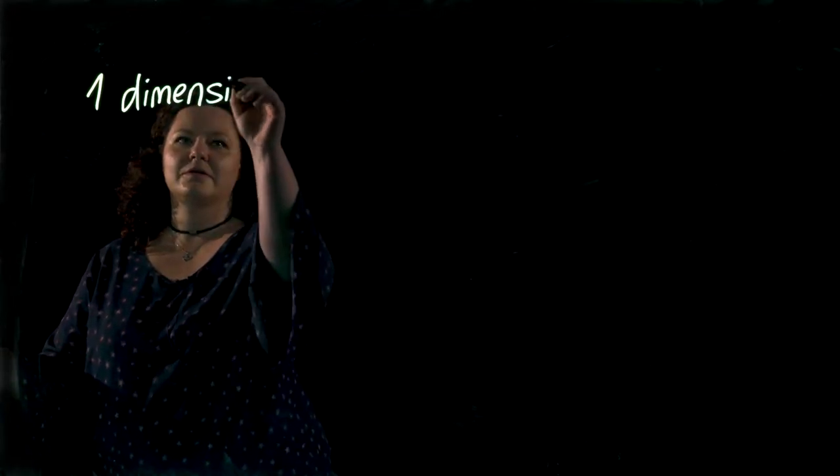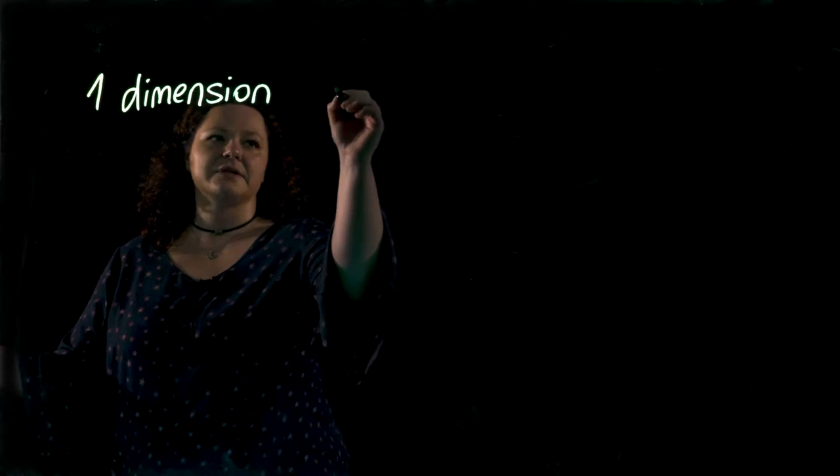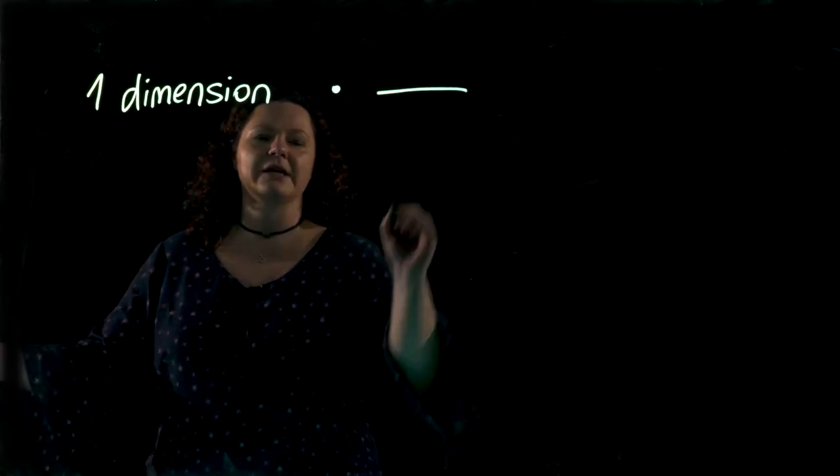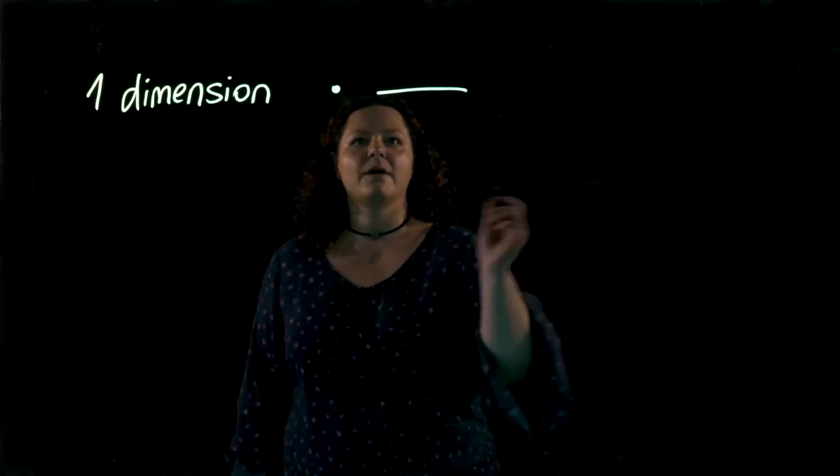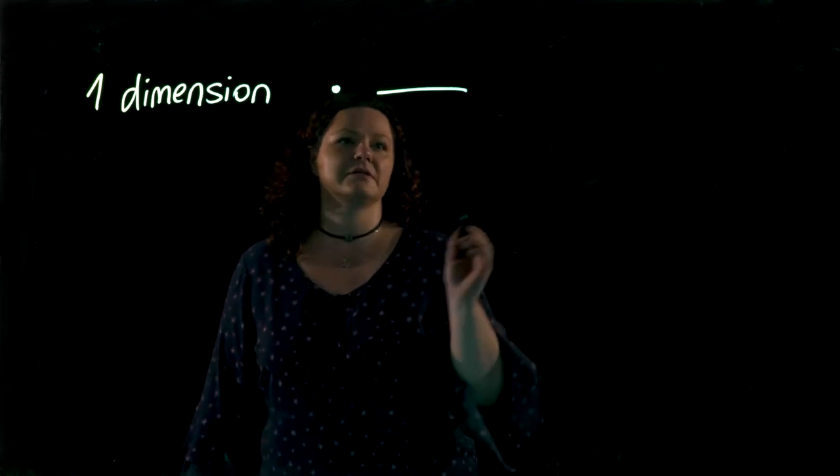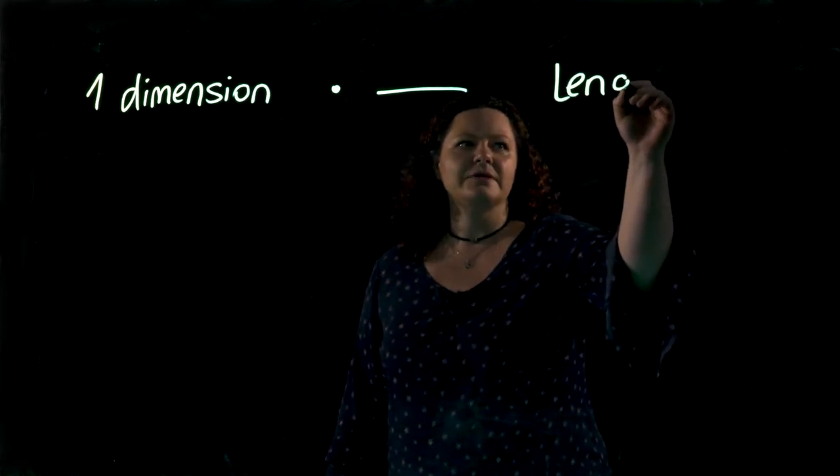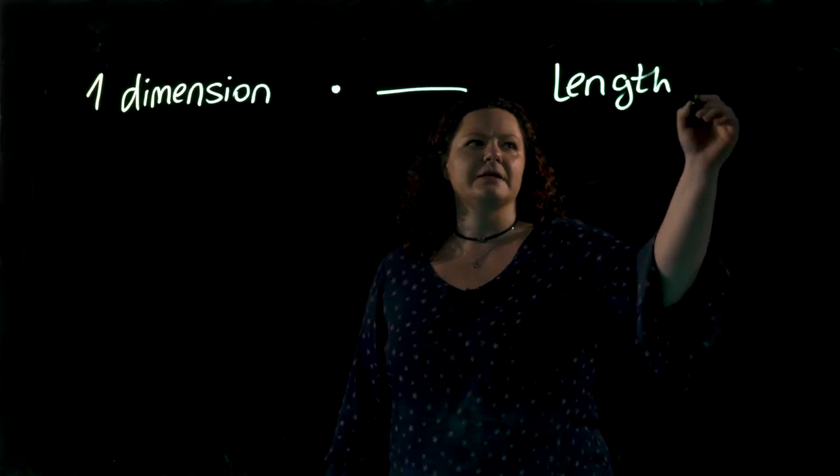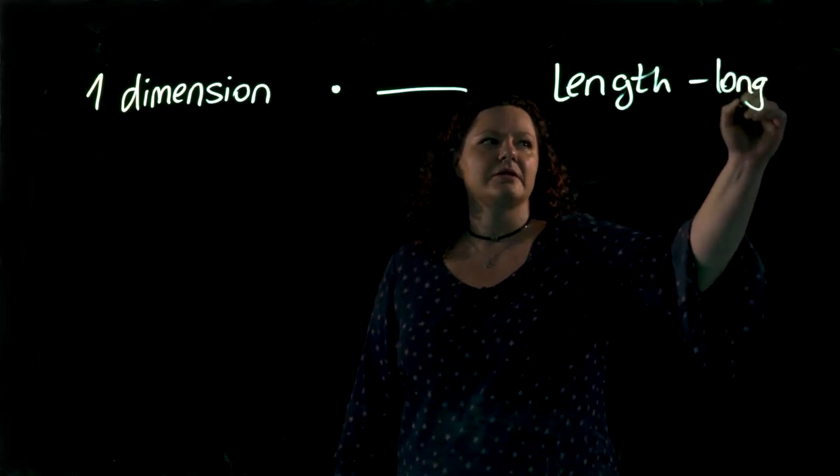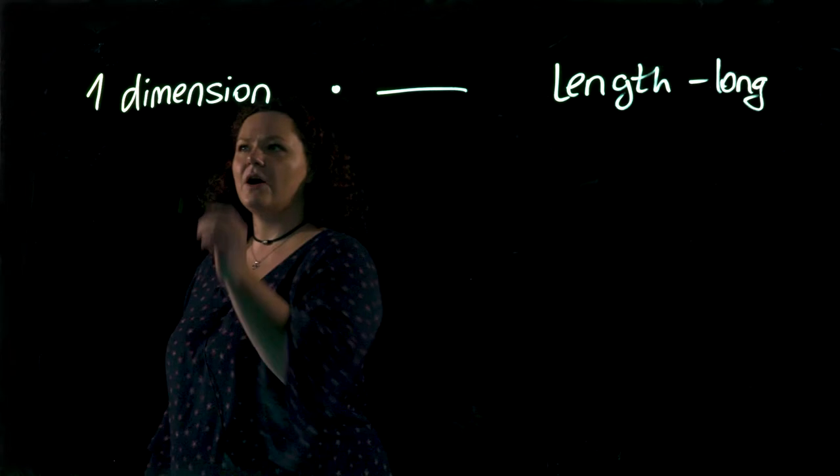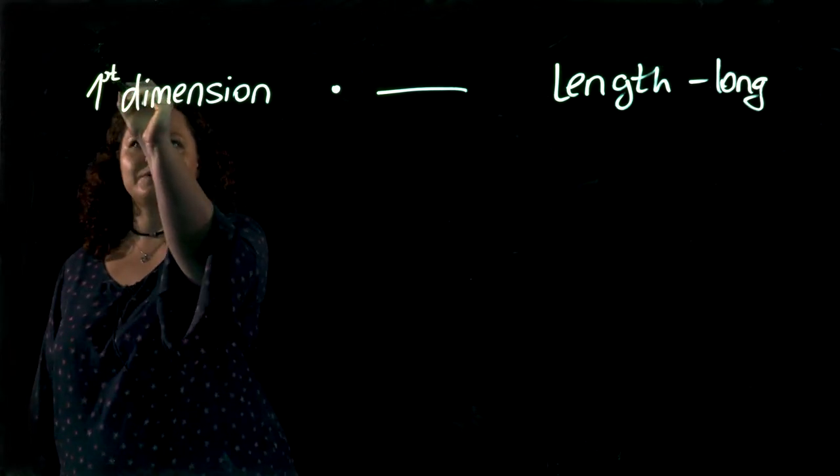So the first dimension is, for example, a point or a line. We can measure the length of the line. So the first dimension gives us the length of something and how long something is.